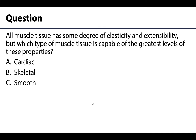This question is actually a bit of a review from the last video in addition to this one, so you have to recall concepts over more than one area — which is kind of the point. You may have concepts from two different videos on one assessment question. Question: all muscle tissue has some degree of elasticity and extensibility. But which type of muscle tissue is capable of the greatest levels of these properties? Is it cardiac tissue, skeletal muscle tissue, or smooth muscle tissue?